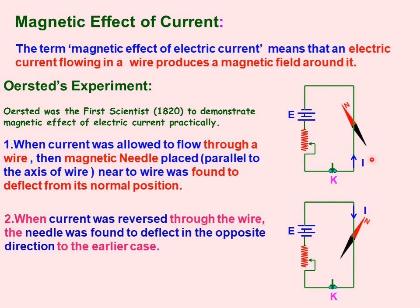When the current was reversed through the wire, the needle was found to deflect in the opposite direction to the earlier case. This makes it very clear that passing electric current produces a magnetic field around it. The strength of this magnetic field can be changed by increasing the magnitude of the current, and the polarity can also be changed by reversing the direction of the current.